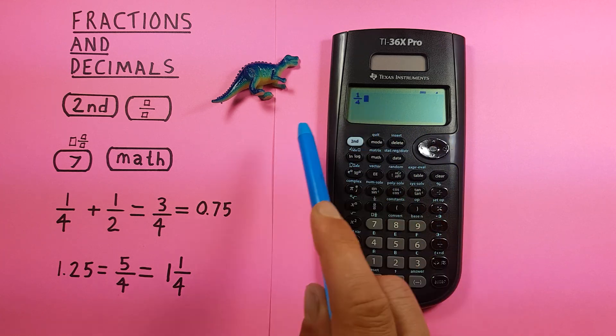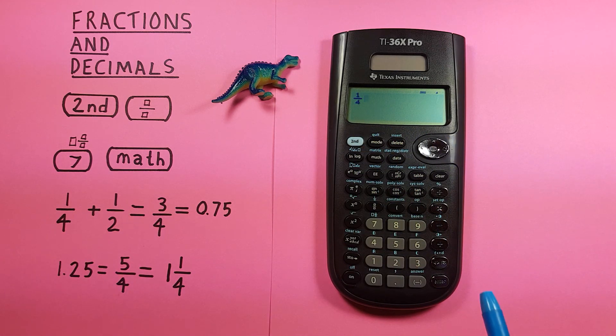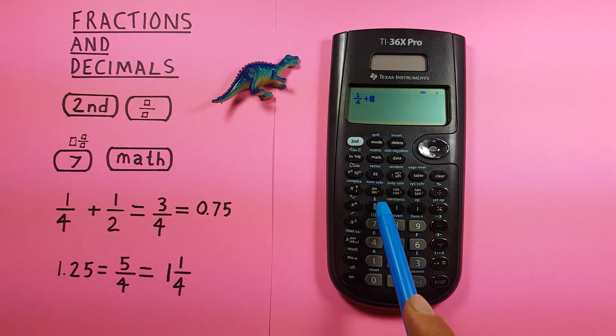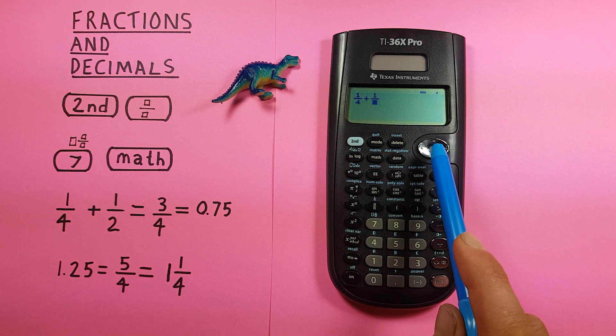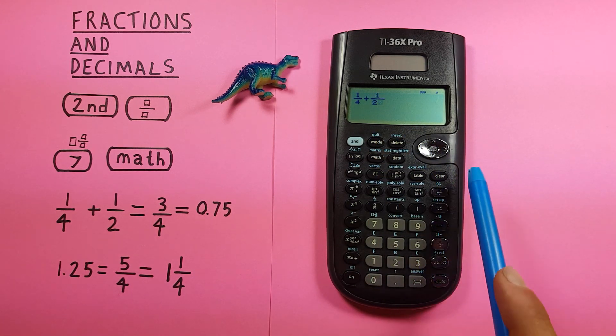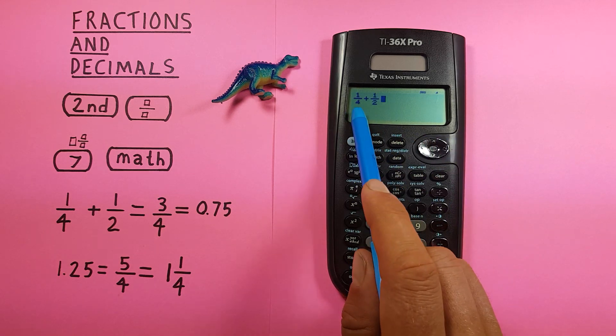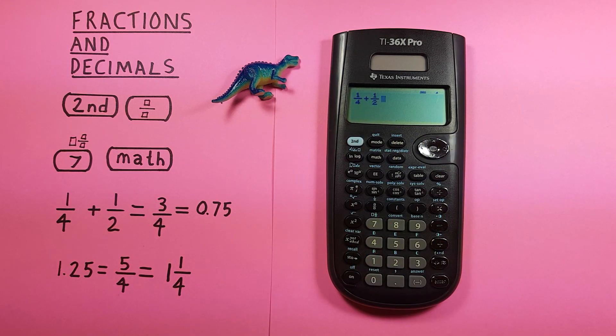You can see 1/4. Press plus, then enter the next fraction 1/2: press the fraction key, press 1, go down to 2, then go right. Now we have 1/4 + 1/2. Press enter and you get 3/4 as the answer.